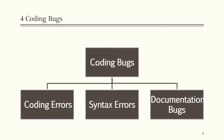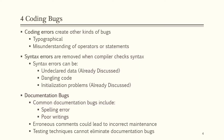Coding bugs include coding errors, syntax errors, and documentation bugs. Coding errors create other kinds of bugs like typographical issues or misunderstanding of operators or statements. Syntax errors are removed when the compiler checks syntax.